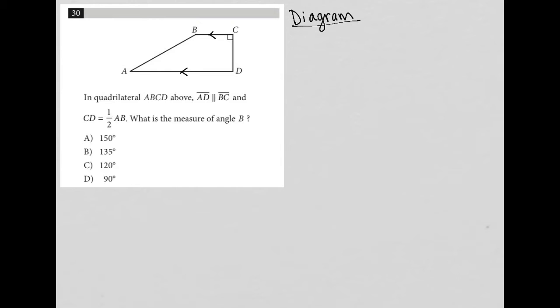What I like to do after drawing any symbols into a diagram is ask myself, what does this mean? What else can I figure out based upon what I've just read? I can tell that if those two lines are parallel, angle D must also be 90 degrees.